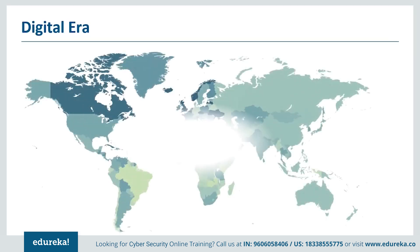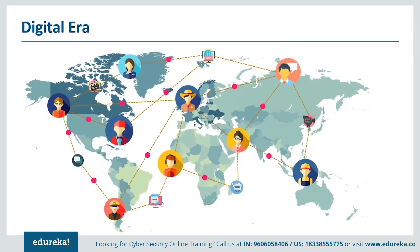The internet today informs, entertains and connects us. It's the backbone of the global economy. Our devices, which are connected through this internet and other networks, open up a world of possibilities. For example, we can access information we need without having to keep it on our devices permanently. We can easily communicate with others on the other side of the world without any glitches. These connected devices form the network that helps us run our lives, but these connections also leave our devices vulnerable to damage and our information vulnerable to theft.